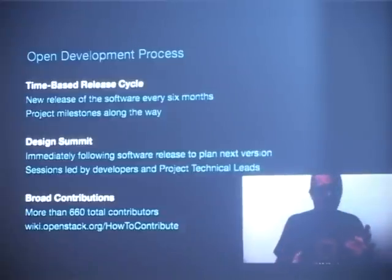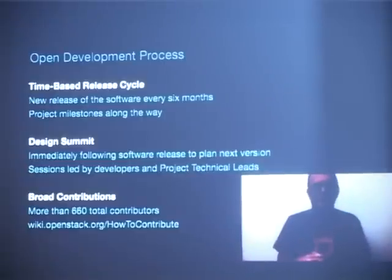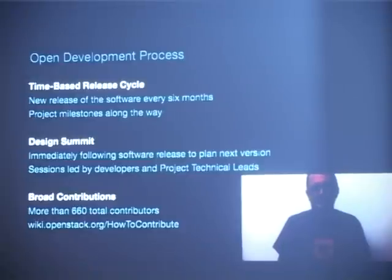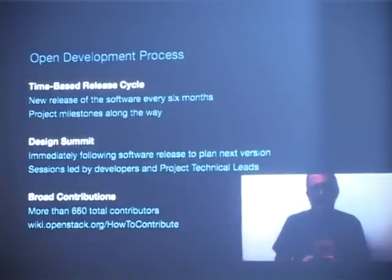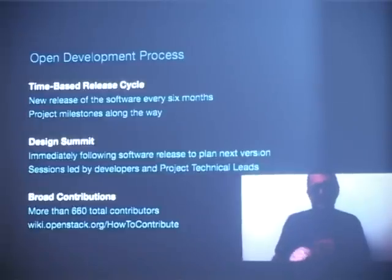They plan out the next release, work on the next version right after the summit, with milestones periodically along the way. Most users tend to gravitate toward the big releases every six months, and those are upstreamed to a number of Linux distributions — all the major Linux distributions now support OpenStack. We've had over 600 contributors who've actually contributed code. If you want to become a contributor, a good starting point is wiki.openstack.org/HowToContribute.